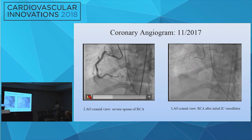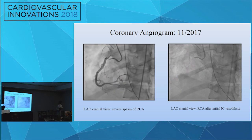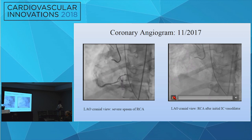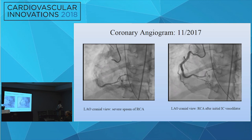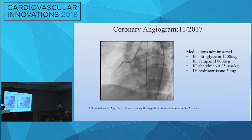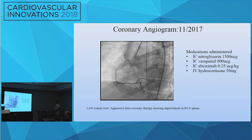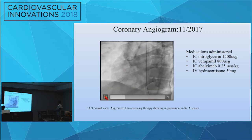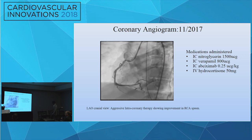This shows severe spasm of the RCA, as you can see. After initial intracoronary vasodilator therapy, it was not completely resolved. After intracoronary 1,500 micrograms of nitro, verapamil, abciximab, and hydrocortisone, there was some improvement in her RCA spasm.